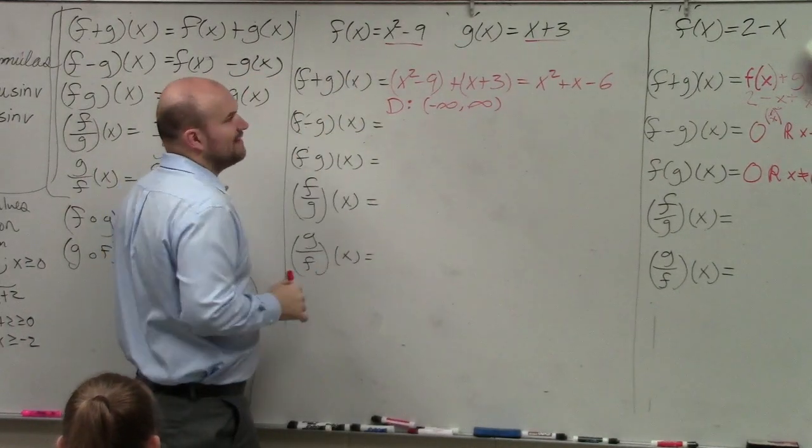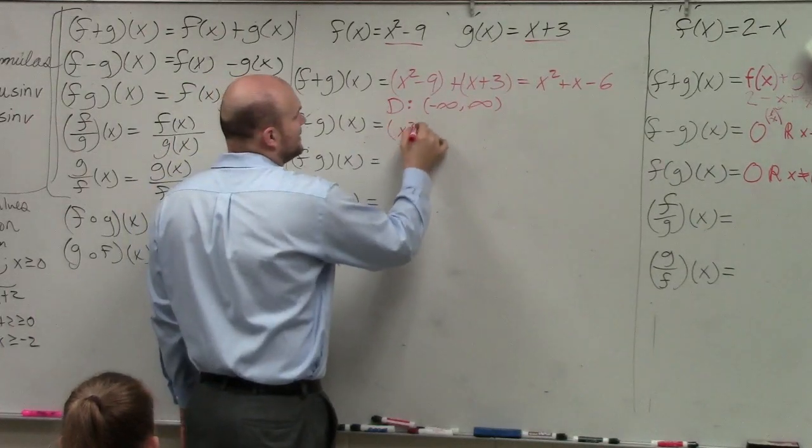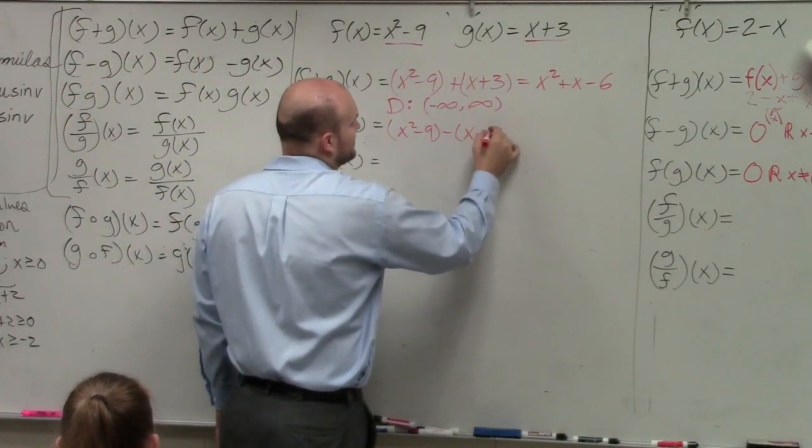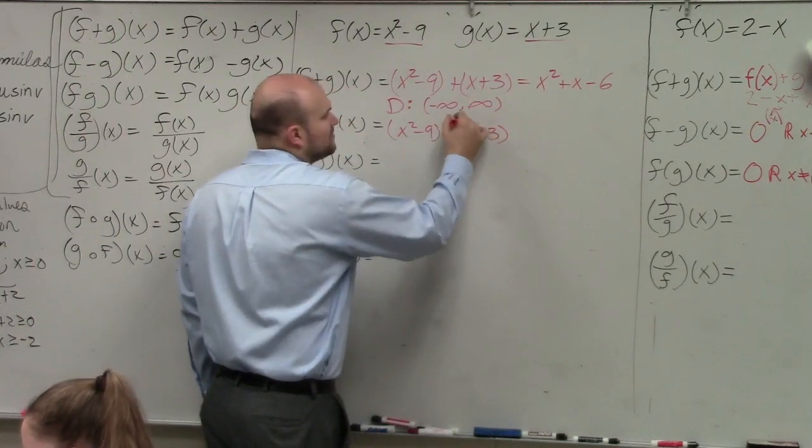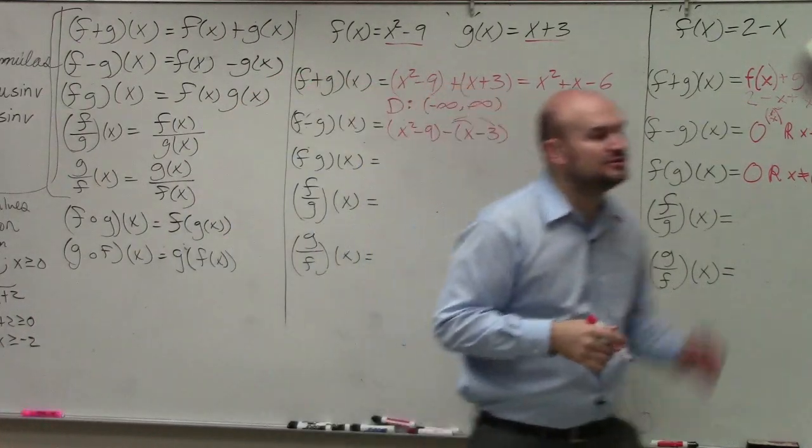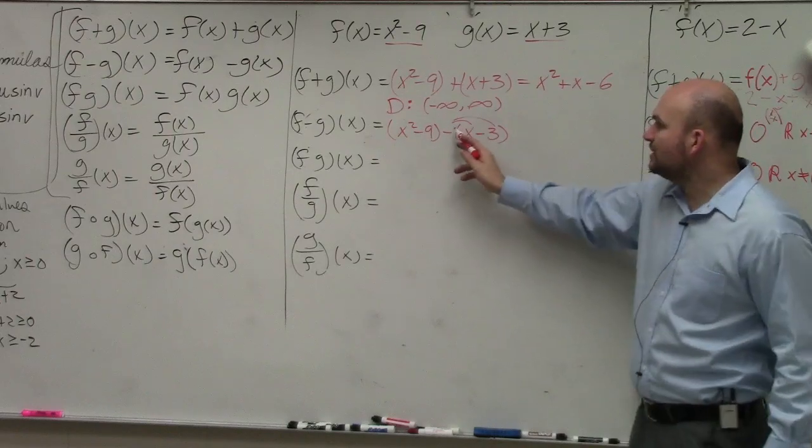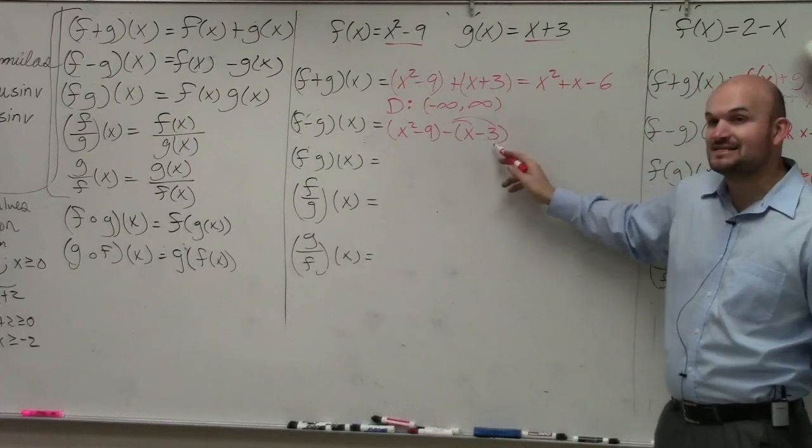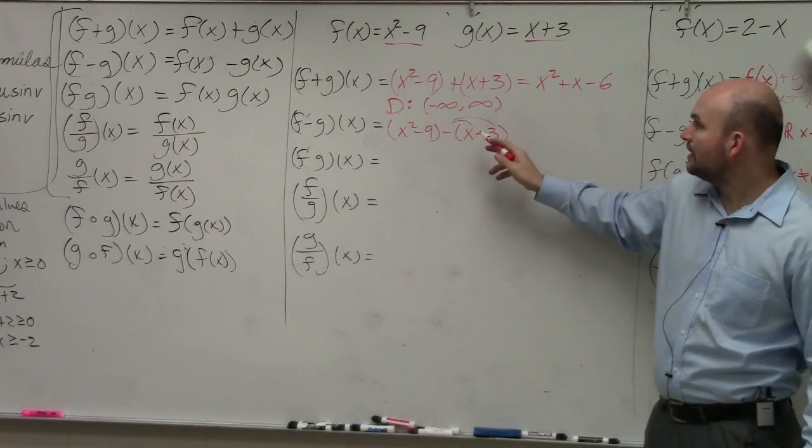All right. Let's do f of x minus g of x. Again, the same thing. Now here, I would probably recommend using parentheses because when you use parentheses, you've got to make sure you distribute that negative. So really, it's a negative x and it's a positive 3, right?